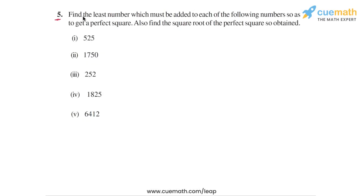In question 5 of this exercise, we have to find the least number which must be added to each of the following numbers so as to get a perfect square. Each of these five numbers is not a perfect square, and we have to find the smallest number we can add to each so that we get a perfect square. We also have to find the square root of the perfect square obtained in each case.